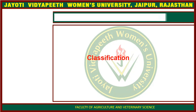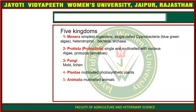According to Whittaker, there are five kingdoms which were proposed. We will discuss about the classification of microorganisms. According to Whittaker, there are five kingdoms: Monera, Protista, Fungi, Plantae and Animalia.